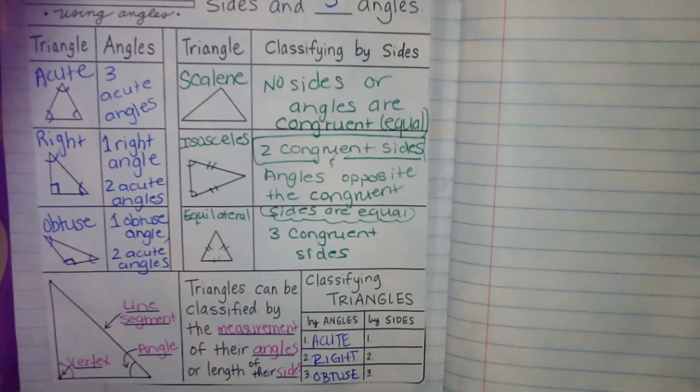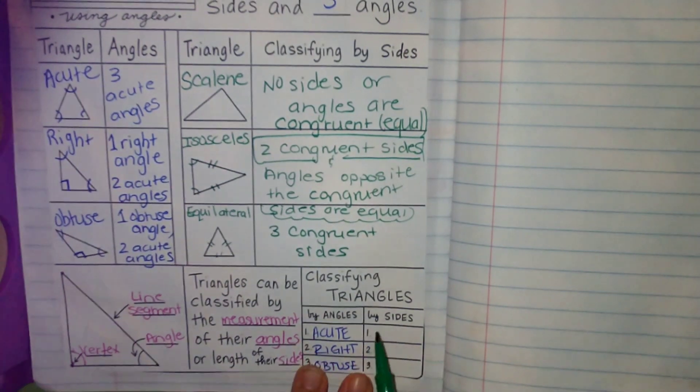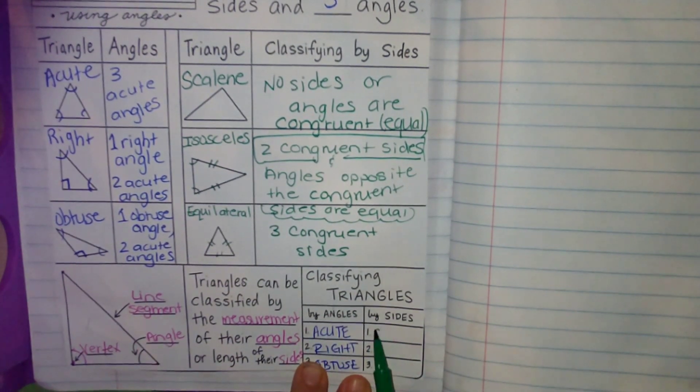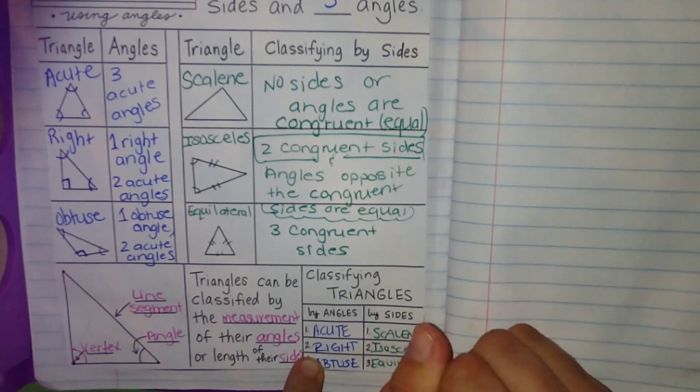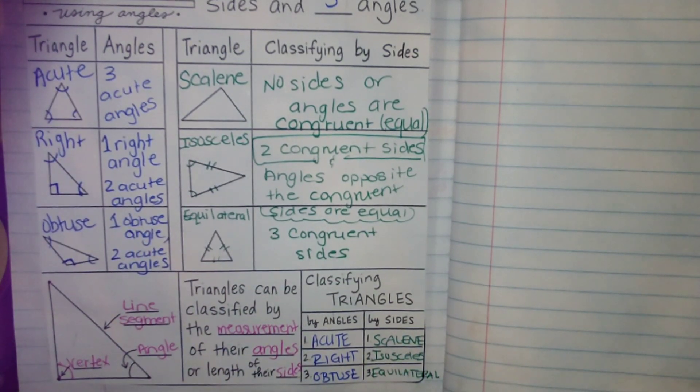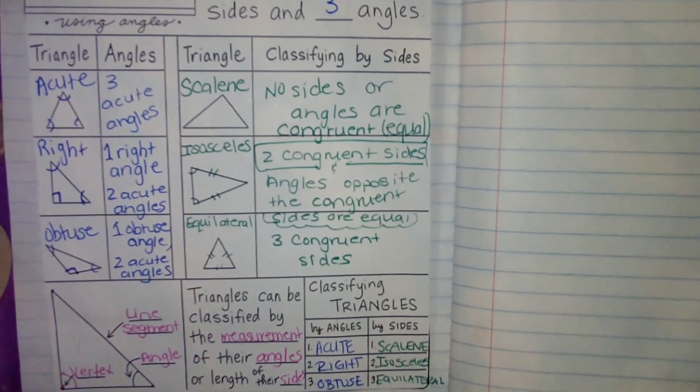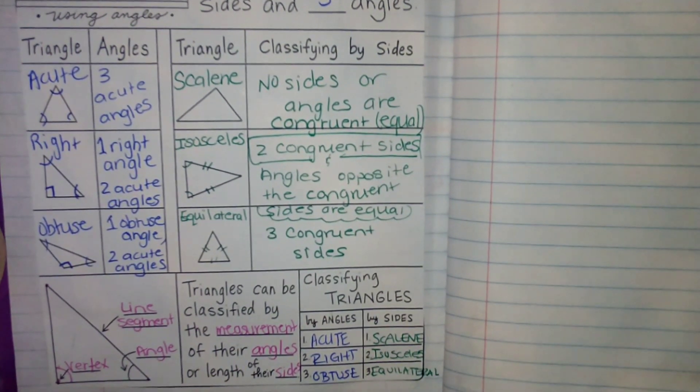So I'm going to get one from column A, and I'm going to get one from column B. We have scalene, we have isosceles, and we have equilateral. So those are the notes for this lesson, 16.1.